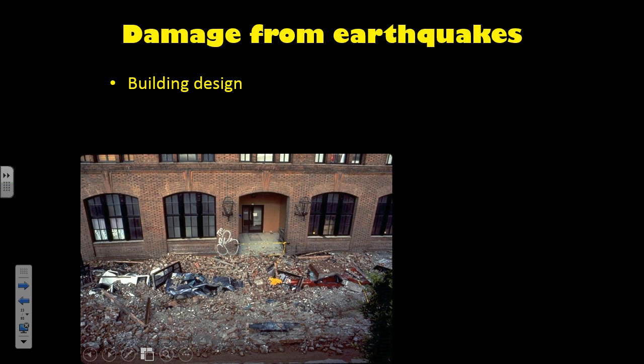What you hear about most in relation to earthquakes is the damage that's caused by earthquakes, and there's a variety of different factors that lead to that damage. One is the building design — are the buildings built to be earthquake resistant? In some areas like California, that certainly is the case because they have earthquakes more frequently, and so they make sure that their building codes ensure that buildings are built earthquake resistant.